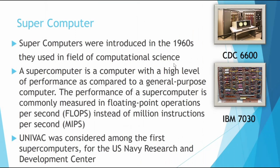Supercomputers were introduced in 1960 and are used in the field of computational science. A supercomputer is a computer with a high level of performance compared to a general-purpose computer. Performance is commonly measured in FLOPS — floating-point operations per second — rather than MIPS (million instructions per second). UNIVAC was considered among the first supercomputers, and examples from that era include the CDC 6600 and IBM 7030.